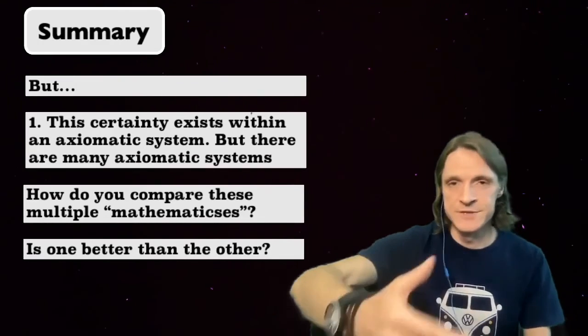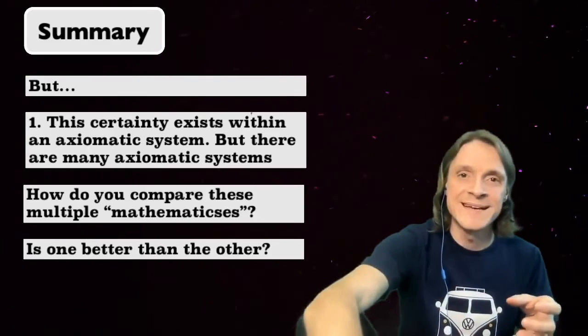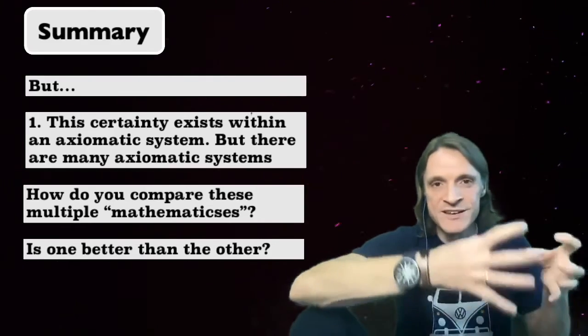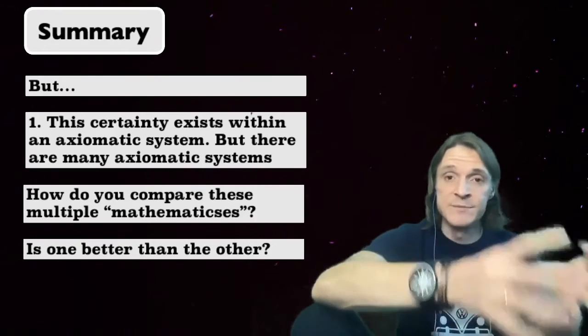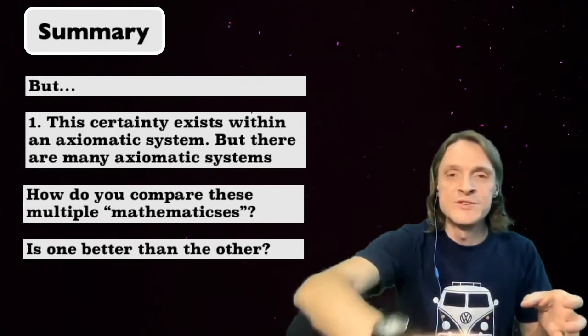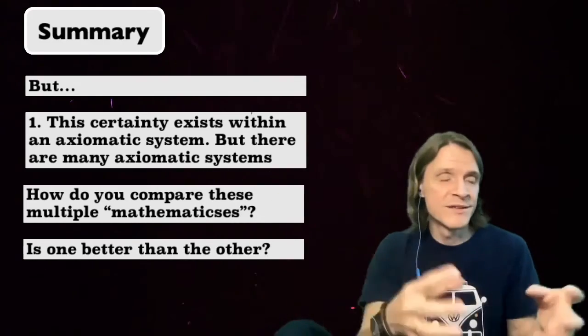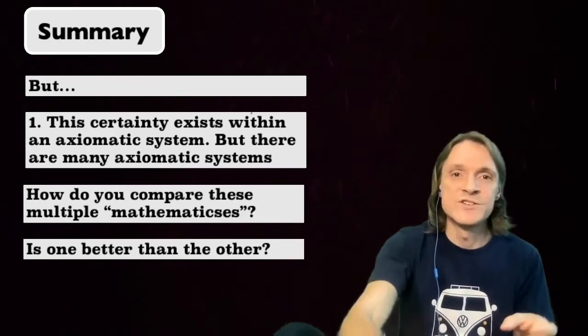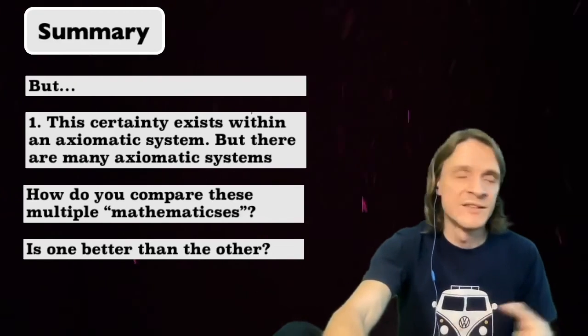But there are at least two big limitations to this certainty. First, the axioms. Mathematics is certain as long as we are talking about drawing conclusions from axioms within an axiomatic system. This certainty exists within the axiomatic system. But the problem is, there are many axiomatic systems. It is possible to construct many mathematics. And this is where certainty breaks down. How do you compare them? Is one better than the other? Are they just arbitrary?